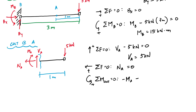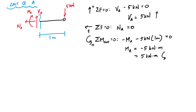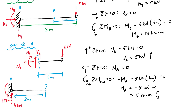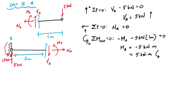Taking moments about the cut: negative MA minus five kilonewtons times one meter equals zero, so MA is negative five kilonewton-meters. A positive shear result means shear is pointing up on the face of the cut. The normal force is zero. The negative moment means instead of causing compression at the top, the moment is five kilonewton-meters going counterclockwise. That's the internal loading from the right side of the cut.